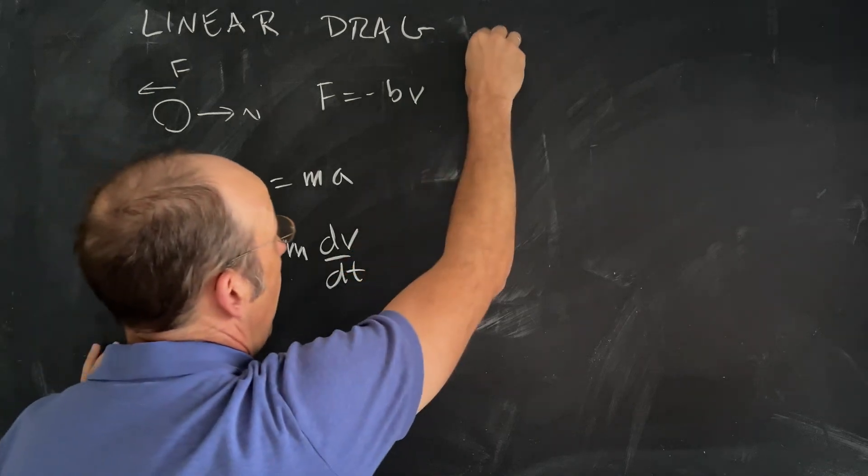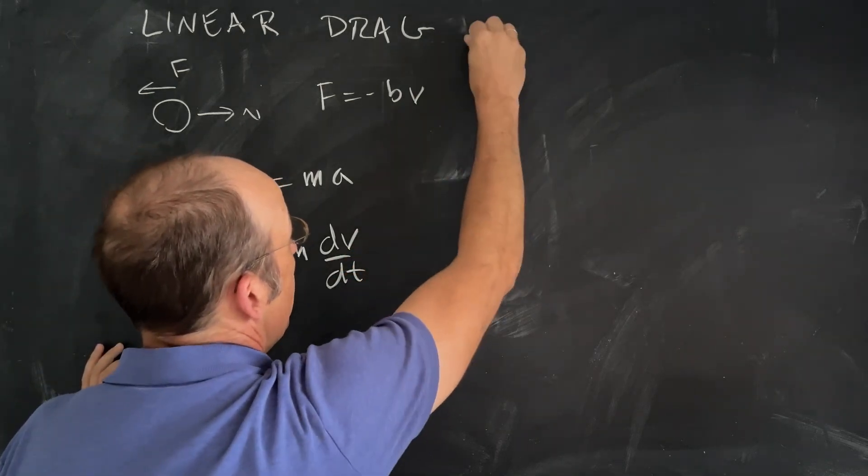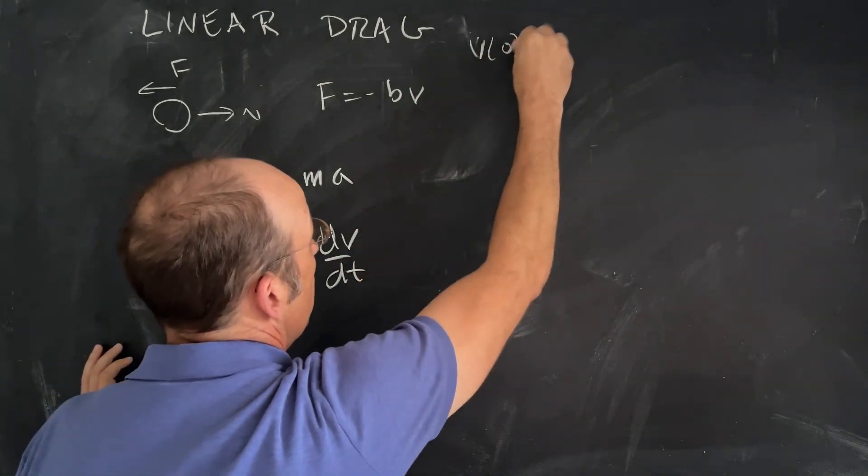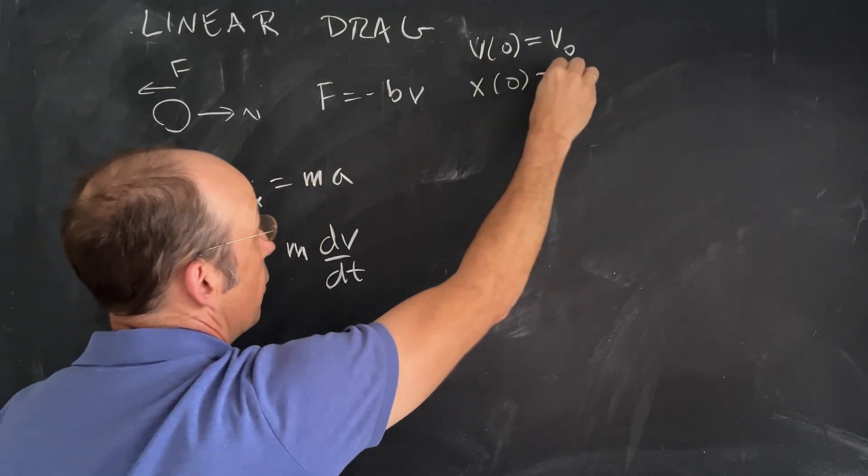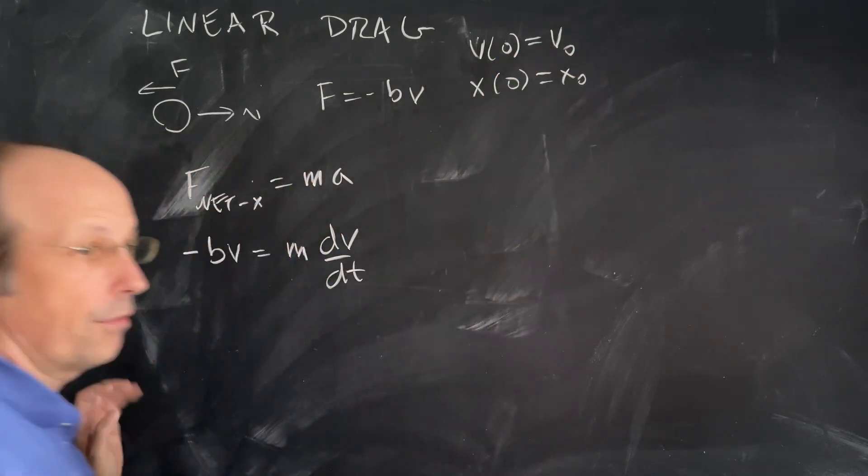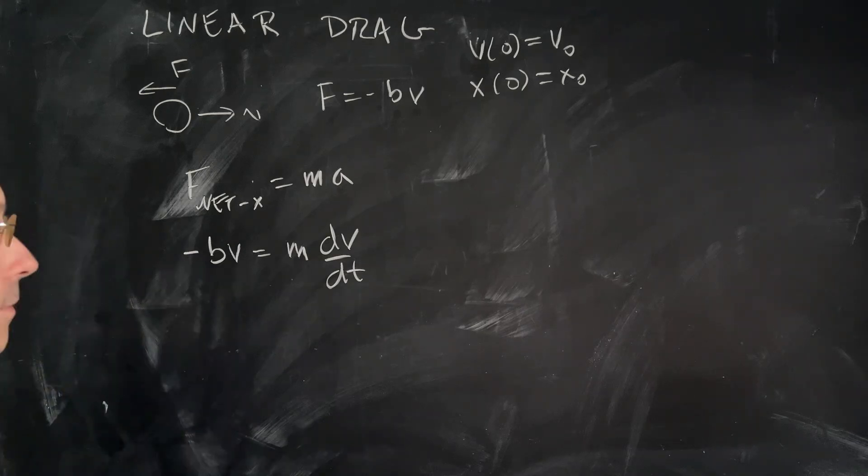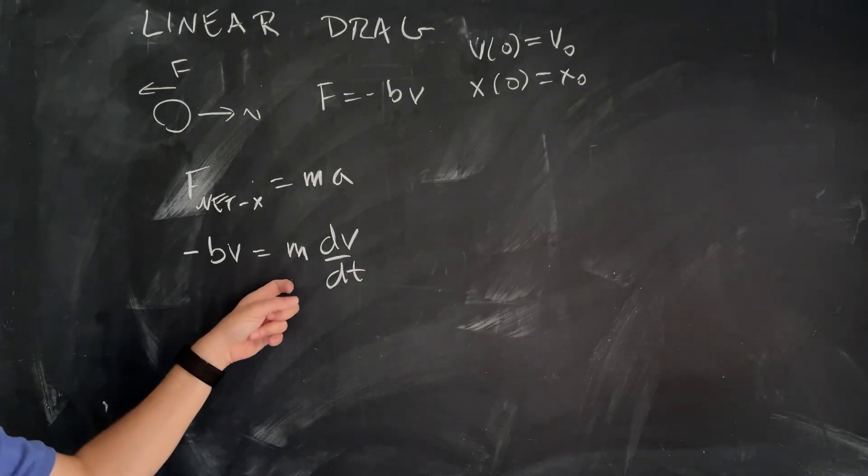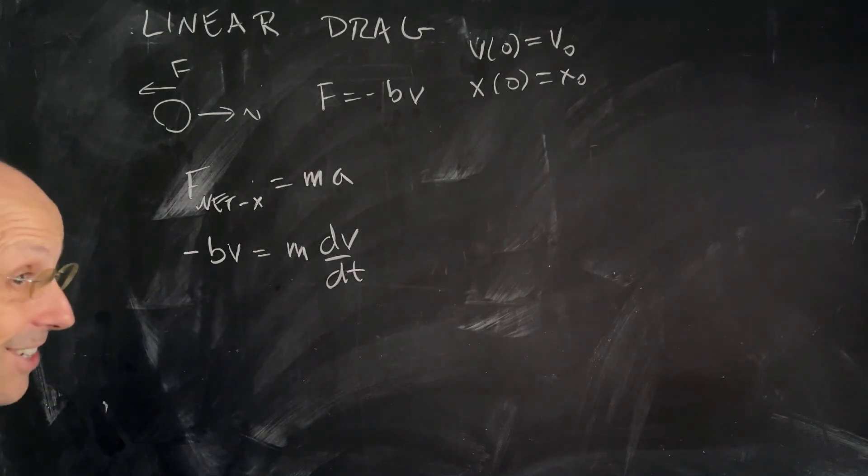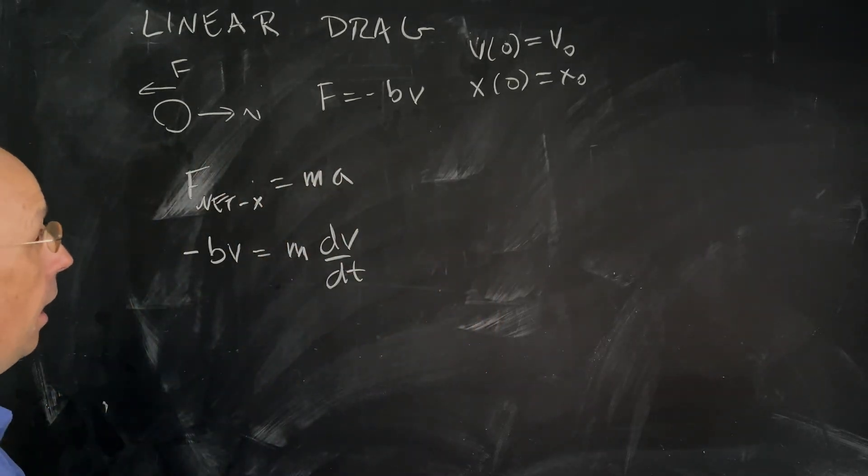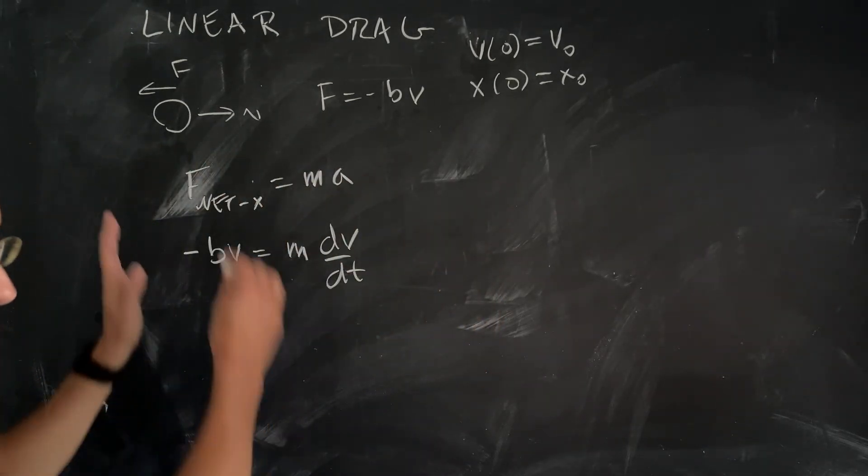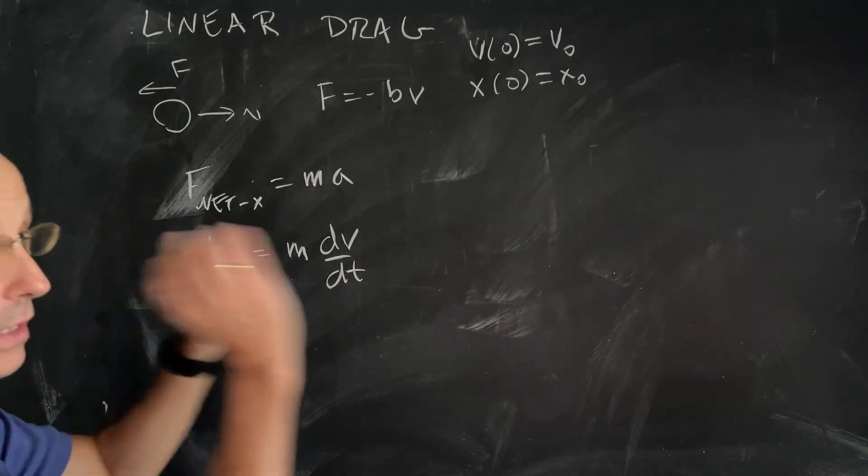I want to solve this. At t equals zero, V is V₀, and x at t equals zero is x₀. We'll need those later as initial conditions. How do I solve this differential equation? It's actually not terribly difficult. Let's separate our variables, get all the V's on one side, all the t's on the other side.